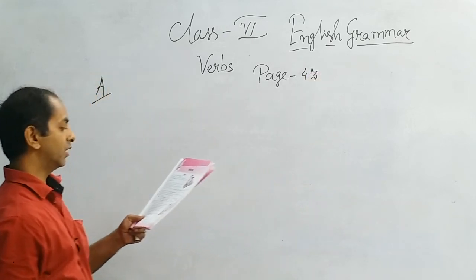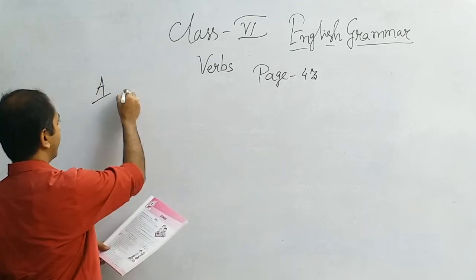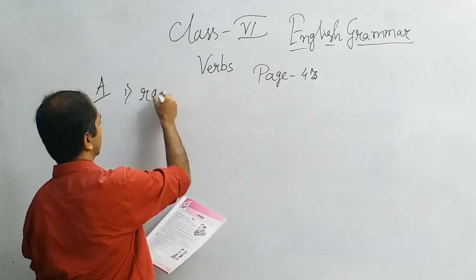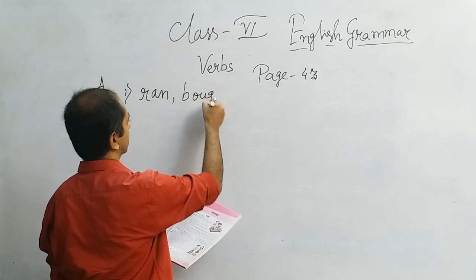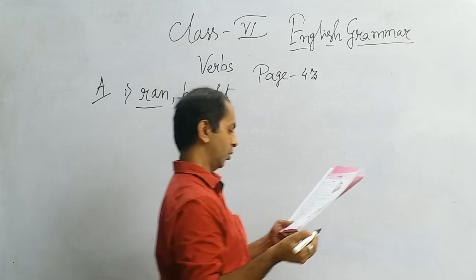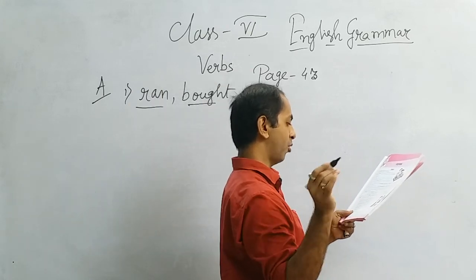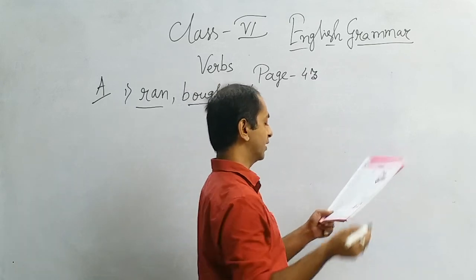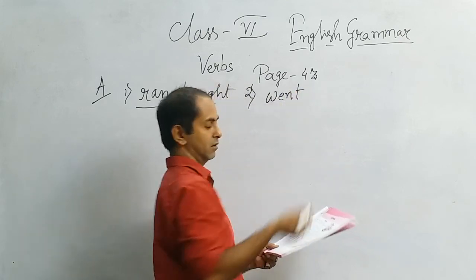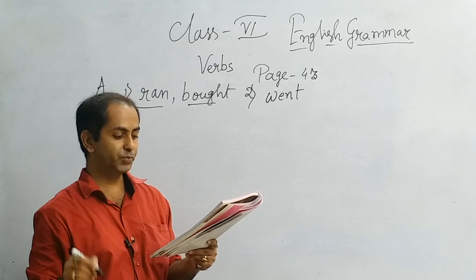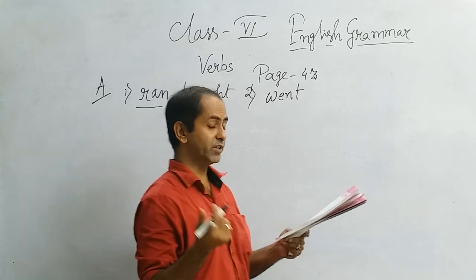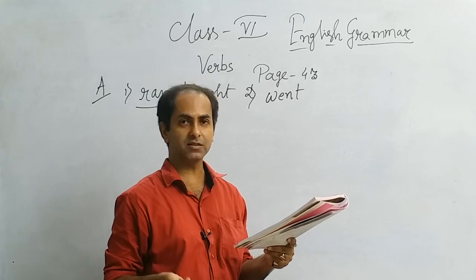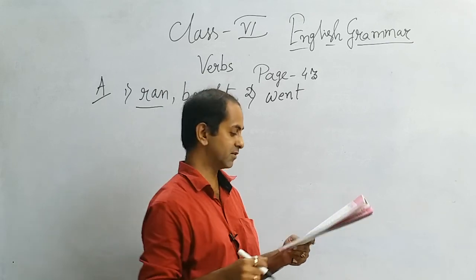Exercise number A. Read the following sentences and underline the verbs. Number 1: Neha ran to the counter and bought the tickets. Ran and bought are the verbs. Number 2: She went to the pediatrician yesterday. Went. This answer was asked to me at least 6 times, which is the word here. She went to the pediatrician yesterday, went is the word.